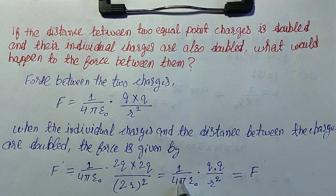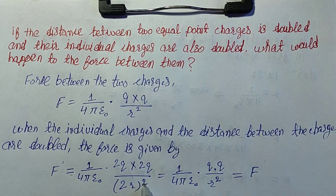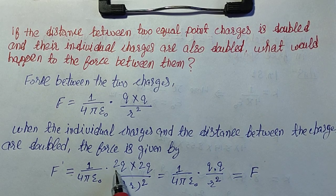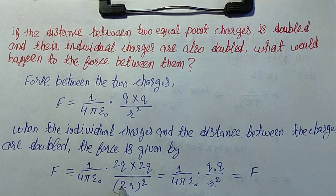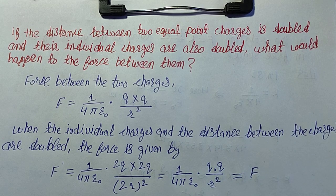Two r squared becomes (2r)². Working through: one over four pi epsilon naught times 2q times 2q over (2r)² gives us 4q² over 4r², which simplifies to q² over r², equaling the original force F.